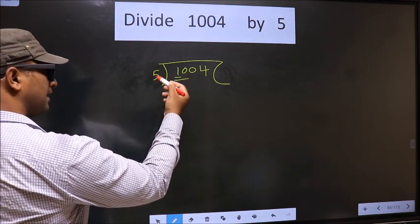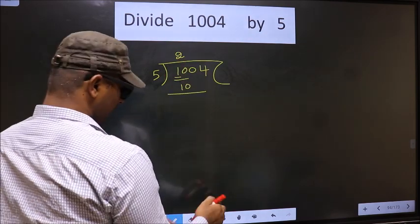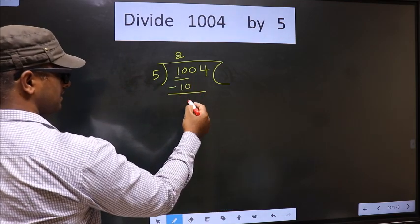When do we get 10 in the 5 table? 5 times 2, 10. Now you subtract. 10 minus 10, 0.